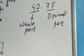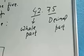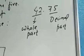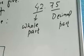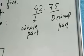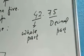Students, I will give you an example of 42.75. If you look at the decimal, the left side is the whole part. So this is the whole part.